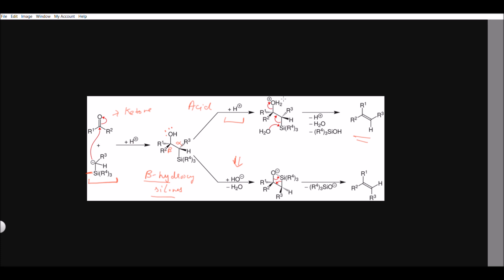What's important here is that this reaction proceeds through an anti-periplanar arrangement. Both leaving groups — the silyl group and the oxonium ion — are in opposite planes. This is a favored anti-periplanar elimination. If you get a compound where the silyl group and hydroxy group are in the same plane, you need to rearrange the geometry so both are in opposite planes for elimination to occur.